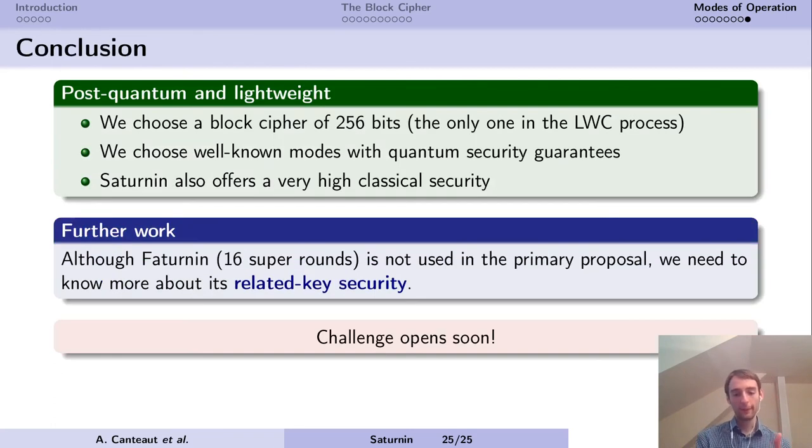To conclude, we wanted to show that post-quantum security and lightweightness are not too orthogonal constraints, and that we may obtain the best of both worlds. We chose a block cipher of 256 bits, which is the only one in the lightweight process, and we chose well-known modes with quantum security guarantees. Saturnin also offers a very high classical security and has very nice wide-trail arguments. Although Faturin, the variant with 16 super rounds, is not used in the primary proposal, we would like to know more about its related-key security for the hash function and for Saturnin QCB. We really want to invite people to perform third-party cryptanalysis, and we're going to open a challenge soon. It will be announced in the rump session. See you at the rump session for the opening of the challenge, and thank you for your attention.